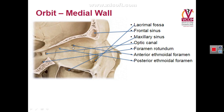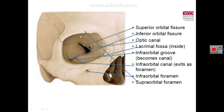We can see the anterior and posterior ethmoidal foramina at the suture between the orbital plate of ethmoid and the orbital plate of the frontal bone. Posteriorly, the roof is formed by the lesser wing of the sphenoid and the medial wall by the body of the sphenoid. Between the lesser wing of the sphenoid and the body is the optic canal, transmitting the optic nerve. The roof also shows a lacrimal fossa laterally, which contains the lacrimal gland.